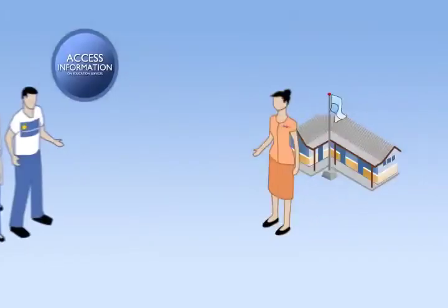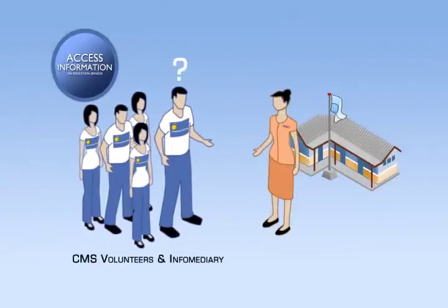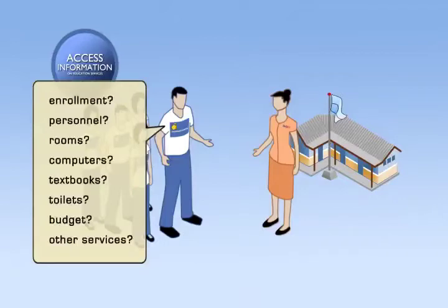Accessing information means you have to go to the school and ask for the information of the Department of Education on that particular school. It could be about enrollment, teaching and non-teaching personnel, the academic and non-academic classrooms, computers, textbooks, even toilets, and then budget.